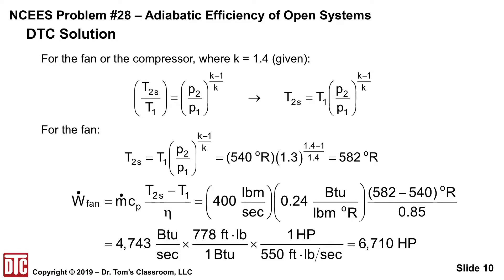Putting that into the equation for the fan power: W-dot of the fan equals M-dot times Cp times (T2S minus T1) over eta. With the given 400 pounds per second, Cp of 0.24 BTU per pound-mass per degree Rankine, the temperature difference of 582 minus 540 degrees Rankine, and an adiabatic efficiency of 0.85, the pound-masses and degrees Rankine cancel, leaving BTUs per second. Converting BTUs to foot-pounds and then to horsepower using 550 foot-pound-seconds per horsepower gives a little over 6,700 horsepower for the fan.